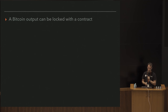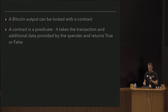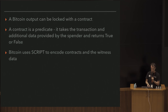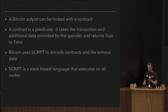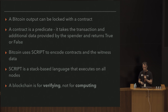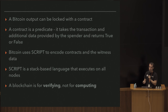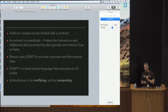In conclusion: a Bitcoin output can be locked with a contract - conditions on who's allowed to spend that output. A contract is a predicate that takes a transaction and additional data provided by the spender, and returns true for a valid transaction or false if not. Bitcoin uses script to encode contracts, and the witness data is the additional data provided to prove the conditions of the contract have been fulfilled. Script is a stack-based language executed on all nodes. Finally, a blockchain is for verifying, not computing - we use script execution, but what we're really interested in is verification.